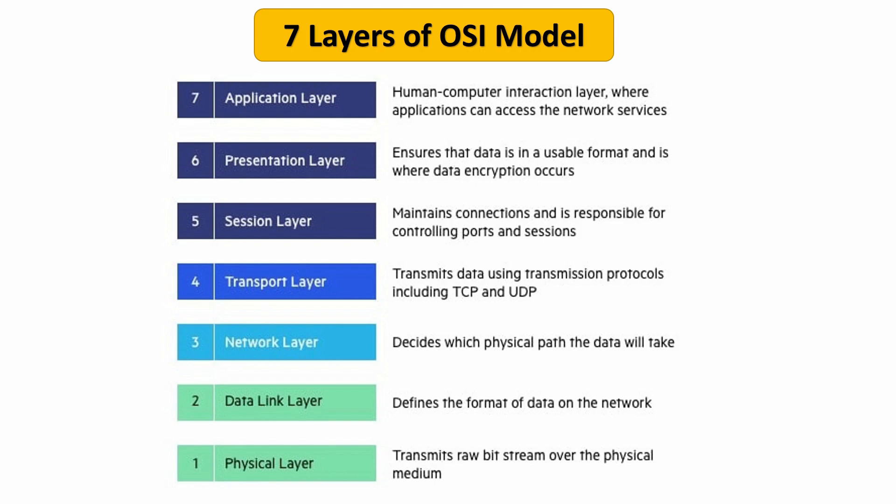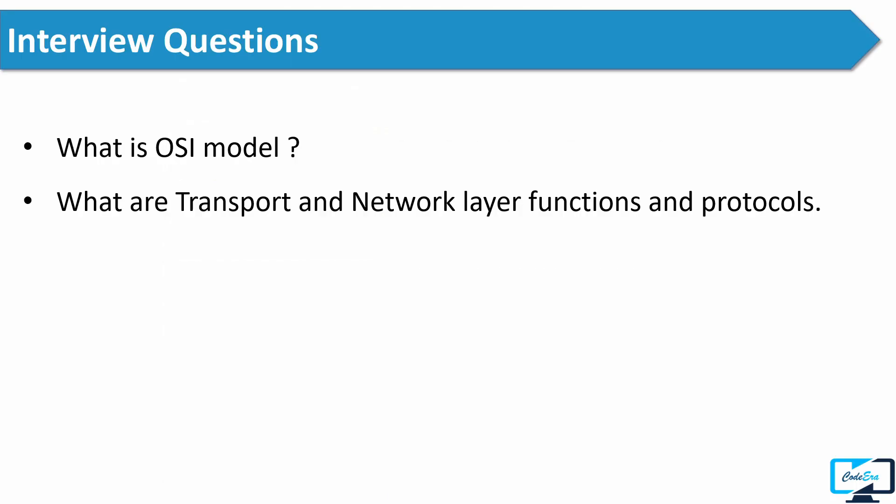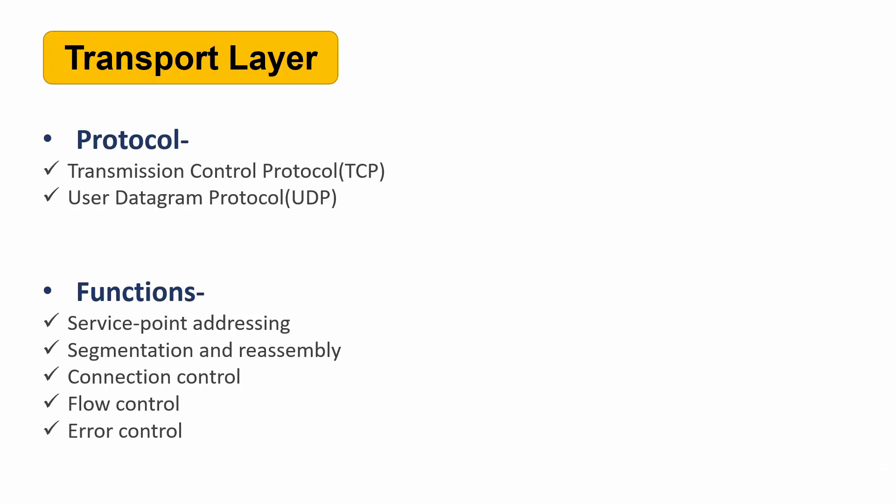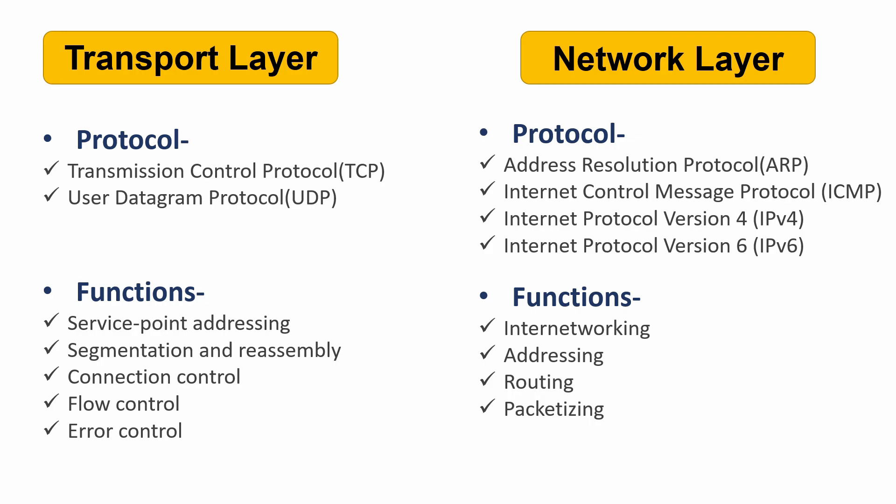After that, the interviewer asked about the transport layer and network layer functions and protocols. In the transport layer we have TCP and UDP protocols, and its functions include service point addressing, connection control, flow control, and so on. In the network layer we have IPv4, IPv6, and ICMP protocols, and its functions include inter-networking, addressing, routing, and so on.